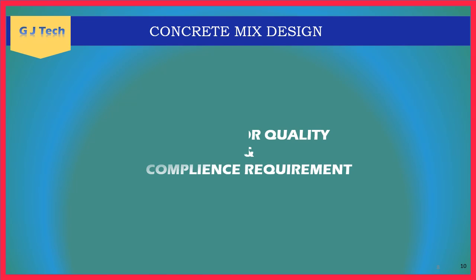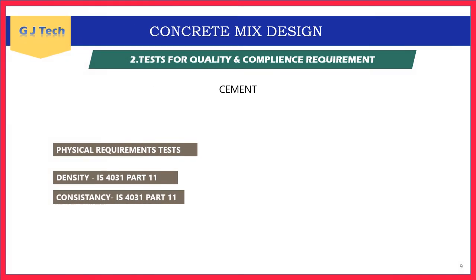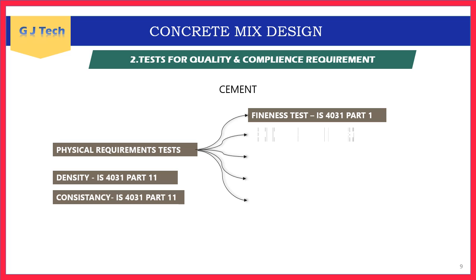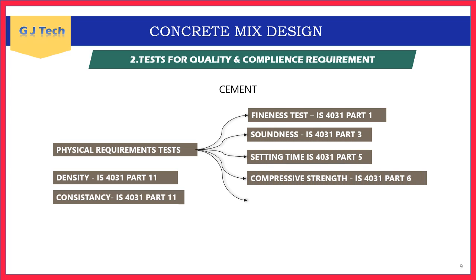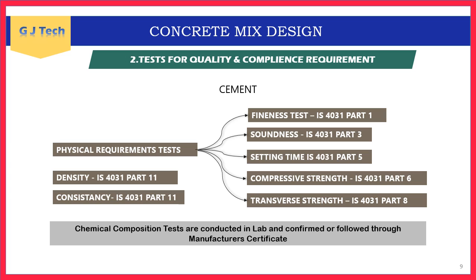Step 2: tests for quality and compliance requirements. Cement is tested for physical and chemical requirements — both must be satisfied. Chemical requirements are confirmed via laboratory tests and manufacturer data. Physical tests include fineness, soundness, setting time, compressive strength, and transverse strength. Density and consistency tests are also conducted on cement.